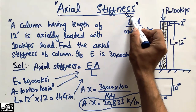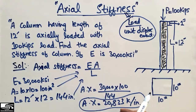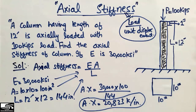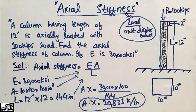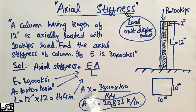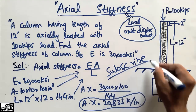So we found that approximately 20,833 — almost 21,000 — kip-force is required to produce a unit displacement in this axially loaded column, which has one end fixed and the other free, a length of 12 feet, and a cross-section of 10 by 10 inches. Hope you guys understand the axial stiffness. I will also make another video on the flexure stiffness. Don't forget to subscribe for daily Seven Engineering videos — thank you for watching.